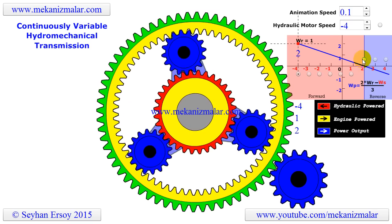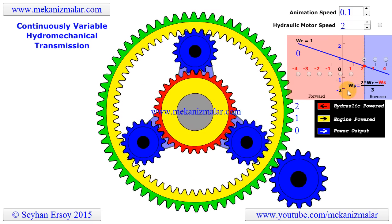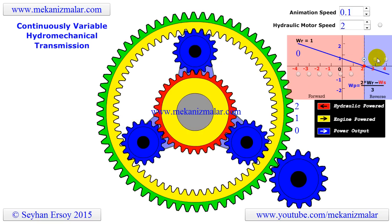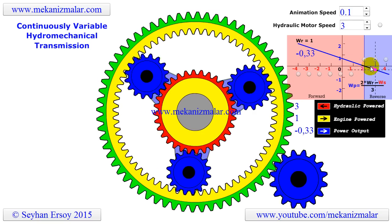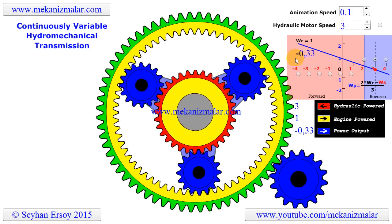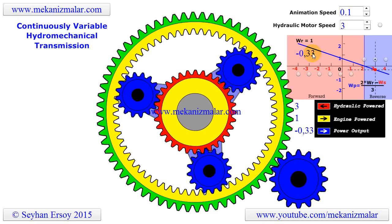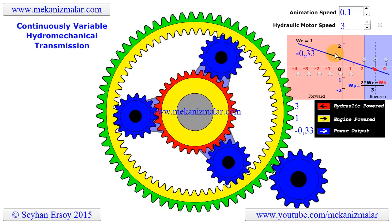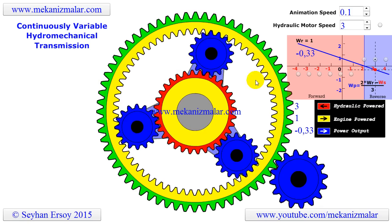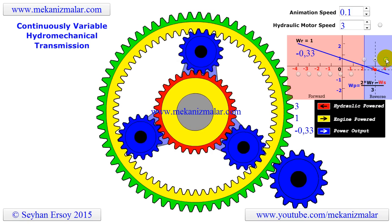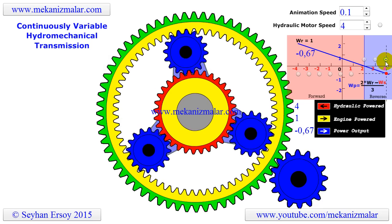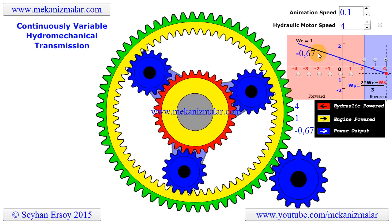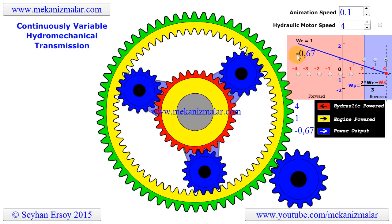Reverse rotation of the cage is obtained when the sun gear rotation value goes above 2. For example, when the speed of the sun gear has a value of 3, the speed of the cage will be 33% of the ring gear in the reverse direction. Finally, for sun gear speeds of 4 and 5, the speeds of the cage will be 67% and 100% of the ring gear in the reverse direction, respectively.